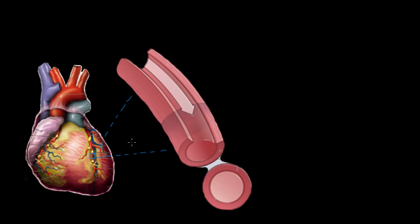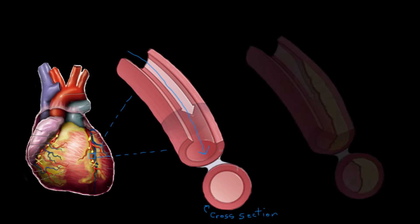Nothing built up inside, so you can see blood is going to flow through this way. This here is a cross-section of the artery. Blood can flow smoothly and nicely through this blood vessel — no obstruction, everything looks good. But when you start getting atherosclerosis happening, things can get a little bit different, and your coronary artery might start to look something like this.